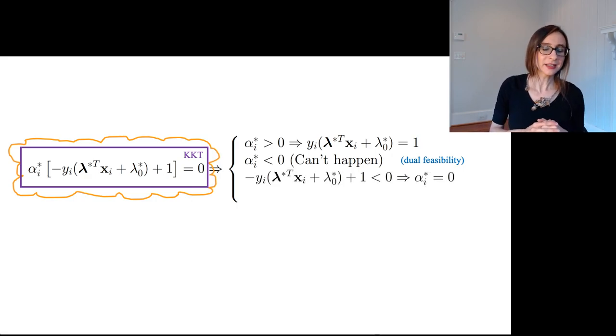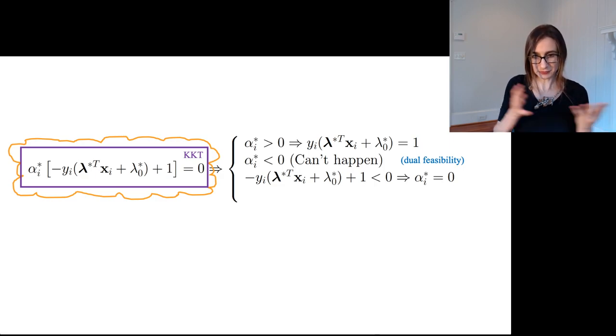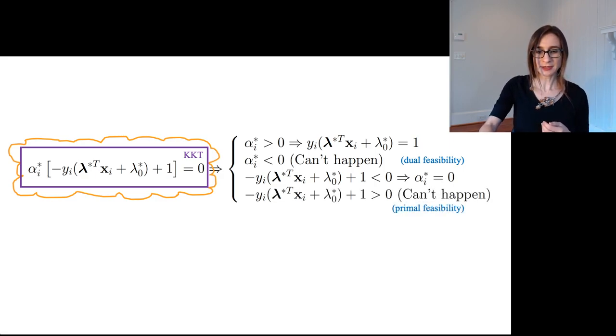Next, let's say that that term in the brackets is less than zero. In that case, if that's true, the alpha better be equal to zero from complementary slackness. And then the last possibility is that this term in brackets is strictly greater than zero. But that can't happen because that would be saying that one of the optimal margins is below one. And we set the whole problem up so that all the margins would be at least one. That would violate the whole way the problem was set up in the primal. So that can't happen.